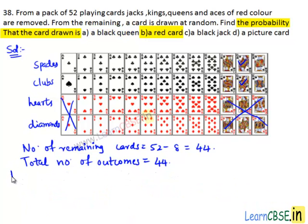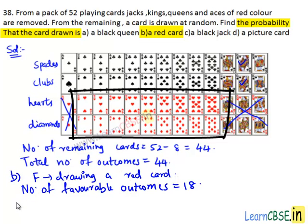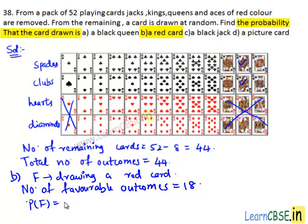Now let's see part (b). We need to find the probability that the card drawn is a red card. Let F be the event of drawing a red card. The number of red cards remaining is 18. Number of favorable outcomes of event F equals 18. Then probability of event F, P(F), equals 18 divided by 44. Here 2 is a common factor; 2 goes into 18 nine times and into 44 twenty-two times. Therefore, the probability that the card drawn is a red card is 9/22.